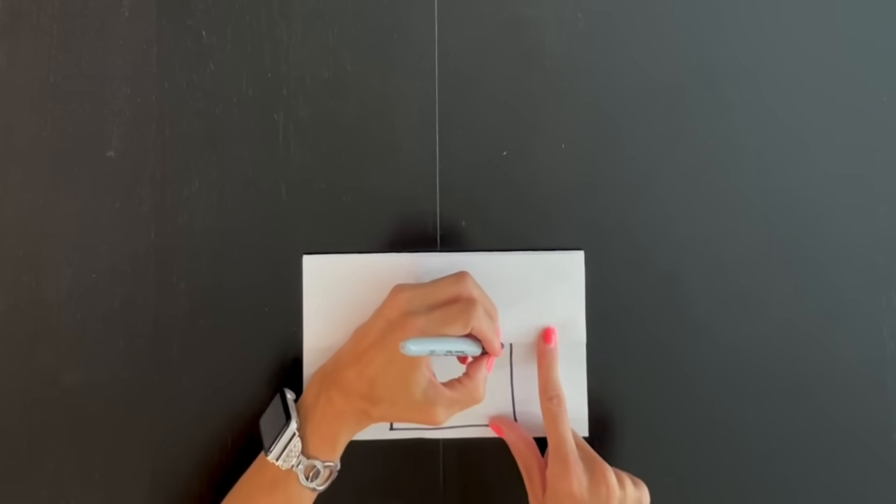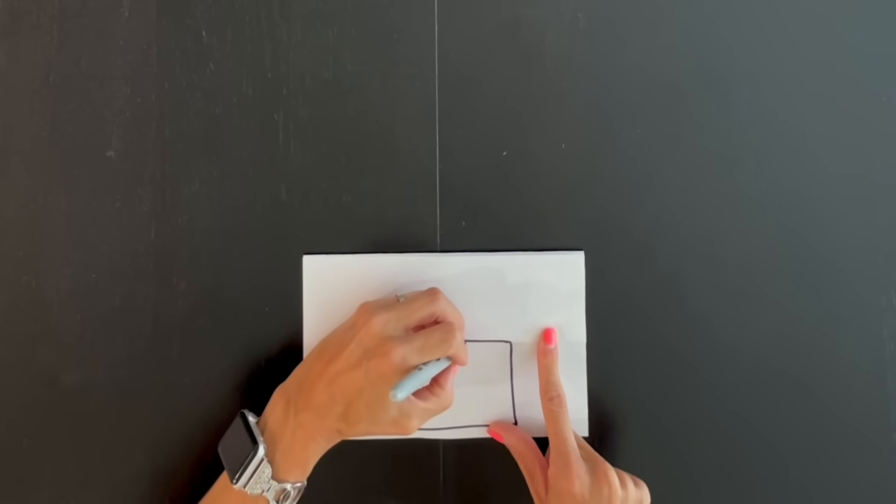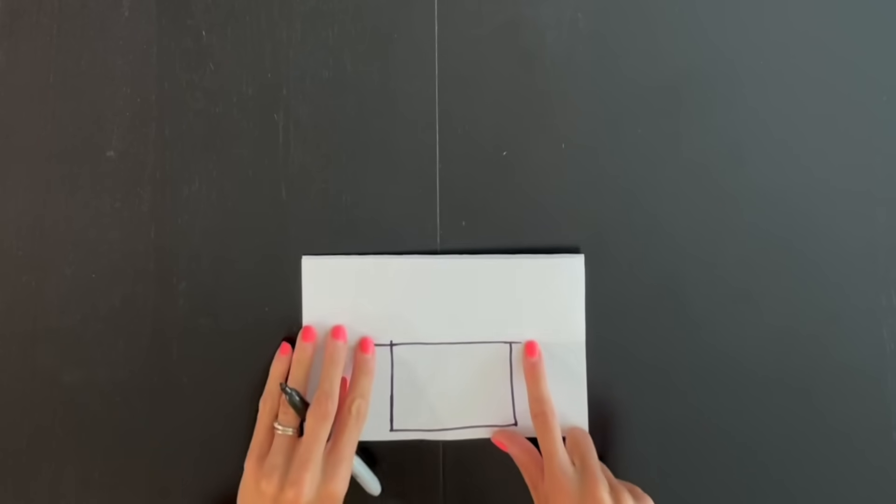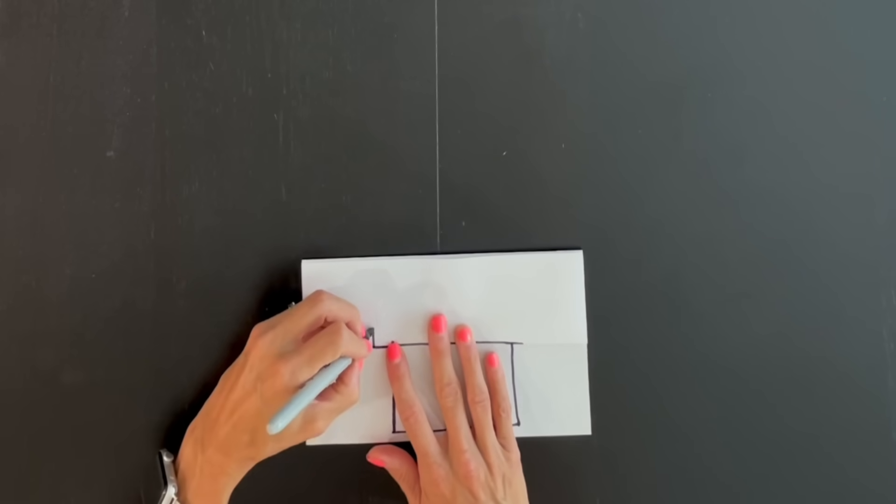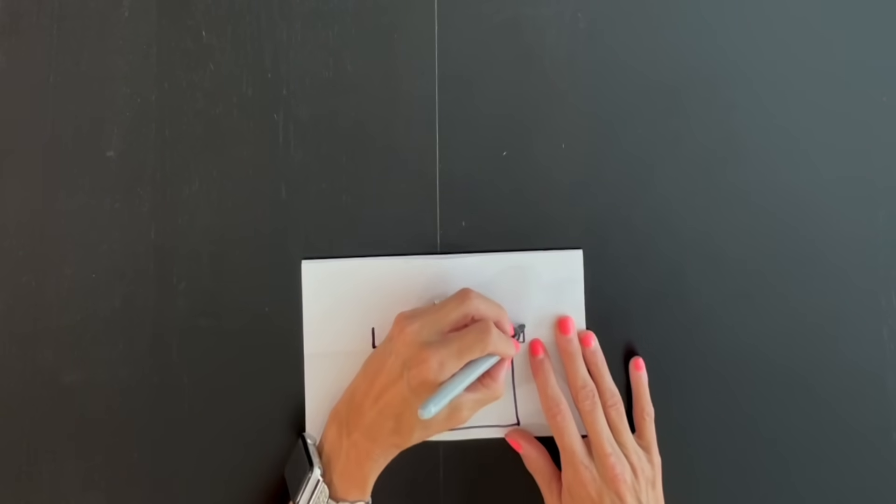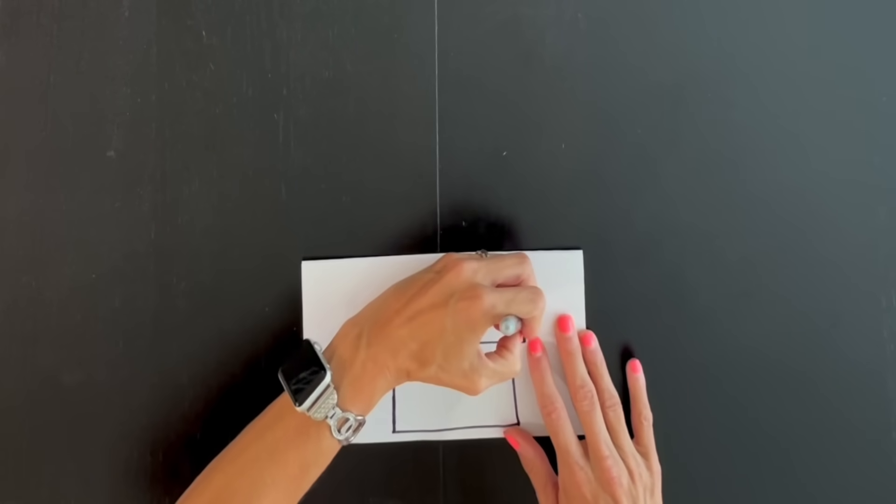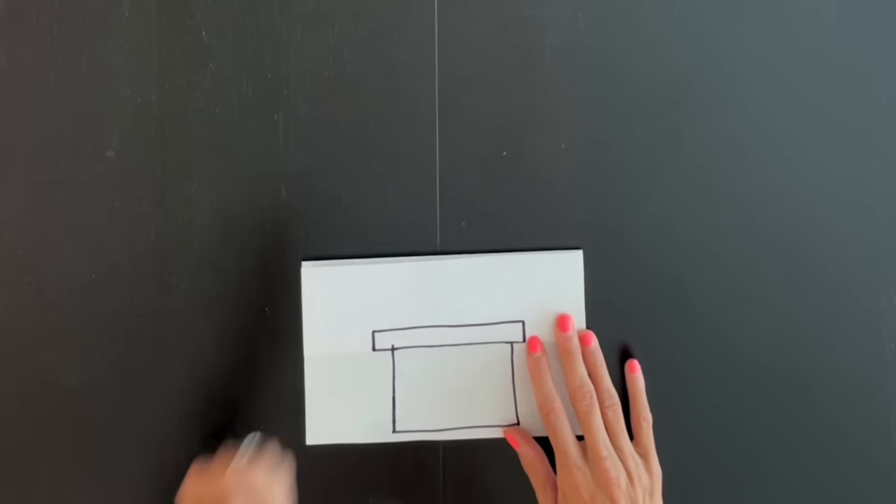Now right here on the fold line, I'm going to draw a line coming straight across. And I actually want it to go a little further on each side. Then I'm going to draw a little line coming up. And on this side, short line coming up. And I'm going to attach those lines with lines straight across as well.